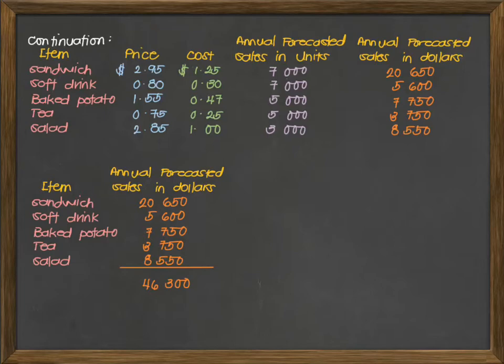The second column indicated is the W sub I. This is simply getting the ratio between the per item annual forecasted sales in dollars divided by the total sales, which is $46,300. So this will be $20,650 divided by $46,300, which gives you 0.446. We usually use three decimal places in solving the weights. Next is for the soft drink, that's $5,600 divided by $46,300, which gives you 0.121. Next for the baked potato, we have 0.167. For tea, that's 0.081. And finally for the salad, that's 0.185. So we're now done with the second column.